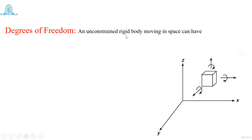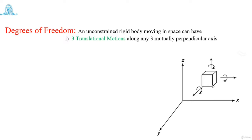So we consider one unconstrained rigid body moving in space with a local coordinate system of x-axis, y-axis, and z-axis. With reference to the origin, it is somewhere in space and we don't know where. How many motions are possible? Three translation motions along three mutually perpendicular axes — it can move along x-axis, y-axis, and z-axis.